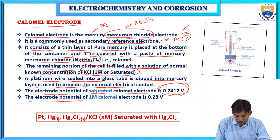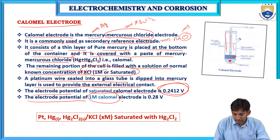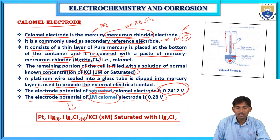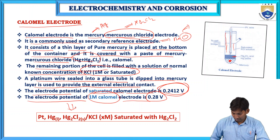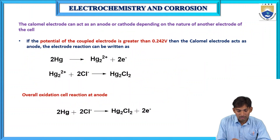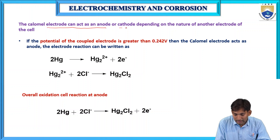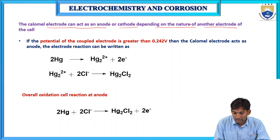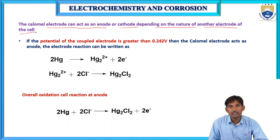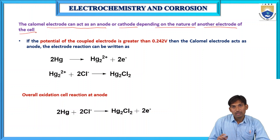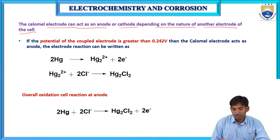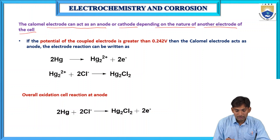If you take one molar KCl, the calomel electrode potential is 0.28 volts. The remaining portion of the cell is filled with a KCl solution of known concentration — either one molar or saturated. A platinum wire sealed into a glass tube is dipped into the mercury layer and provides external electrical contact. The calomel electrode can act as anode or cathode depending upon the nature of the other electrode connected to it.